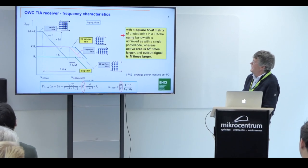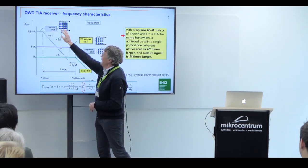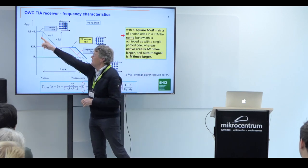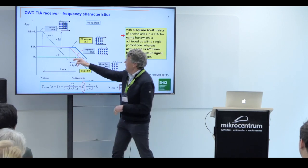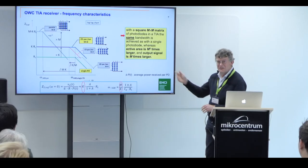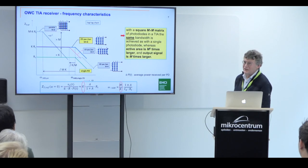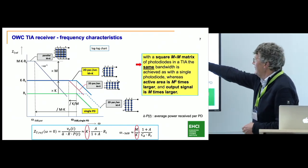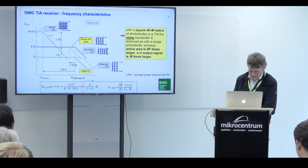From this analysis you can understand that the bandwidth of such a structure can be equivalent to a single photodiode. The photodiode current is K times as large as a single photodiode. Looking at the frequency characteristics: if you put all photodiodes in parallel you get M×K photocurrent but decrease bandwidth by a factor M×K. With our proposed matrix approach, you go down in current by a factor of K, but bandwidth remains the same as a single photodiode. The conclusion is that you get the same bandwidth as a single photodiode, while you have increased your active area by a factor M², and the output signal is M times larger.